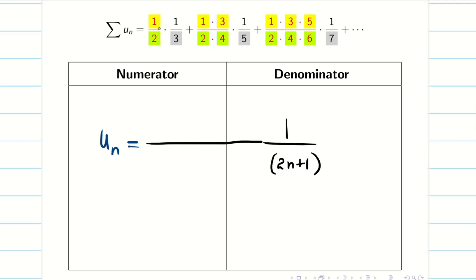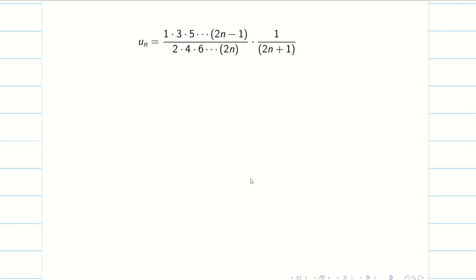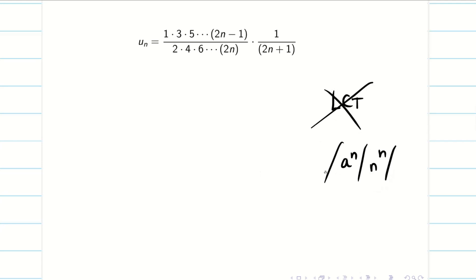So the gray term is written simply as 2n+1, but the other two terms are increasing products. The numerator goes 1, 1·3, 1·3·5, up to 2n−1. Similarly in the denominator, 2, 2·4, 2·4·6, up to 2n. Since the terms are increasing products, I cannot use the limit comparison test — LCT cannot be applied when we see terms like a^n, n^n, x^n, n factorial, or increasing products. So the only option is to go for the ratio test.